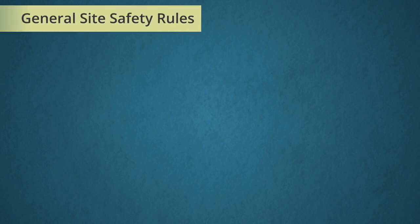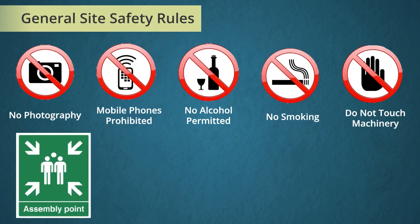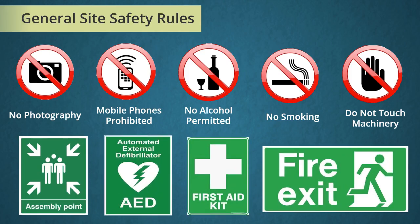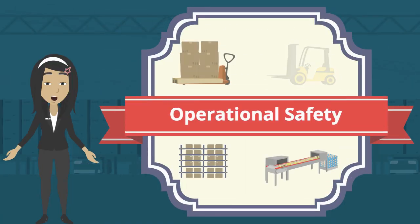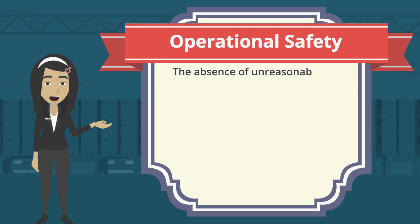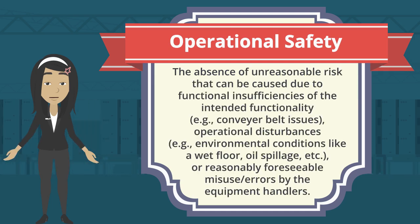General site safety rules are mandatory rules to be followed while working on the sites. A few general site safety rule signs are shown on screen. Now we come to operational safety, which means the absence of unreasonable risk caused due to functional insufficiencies of the intended functionality.